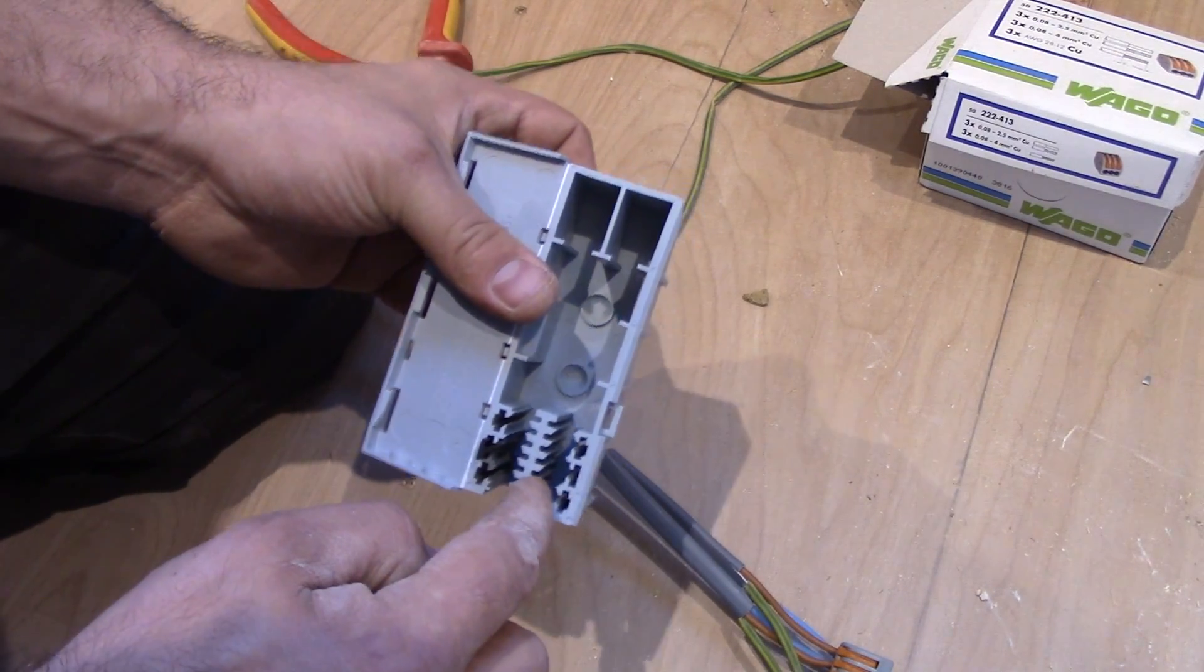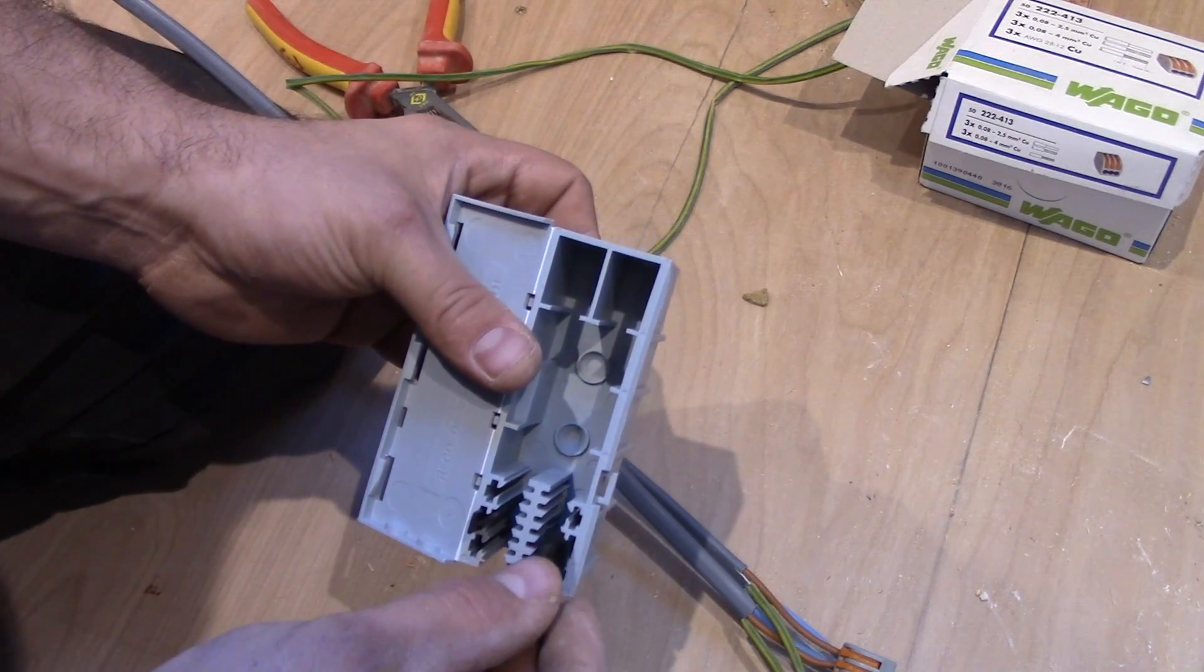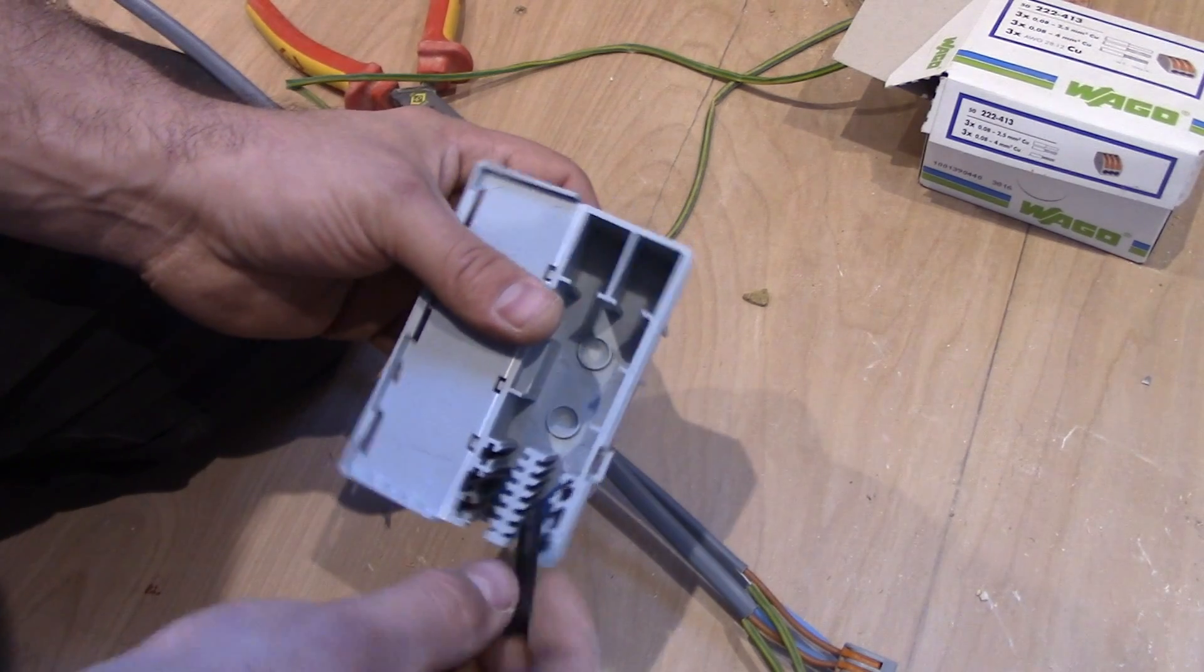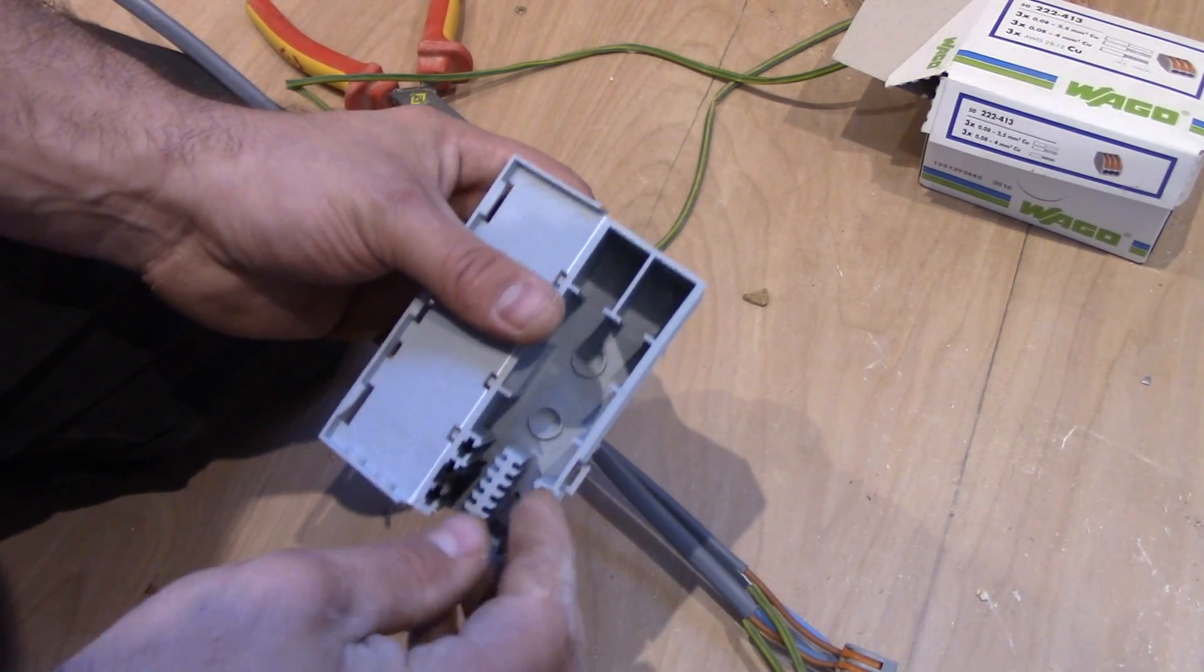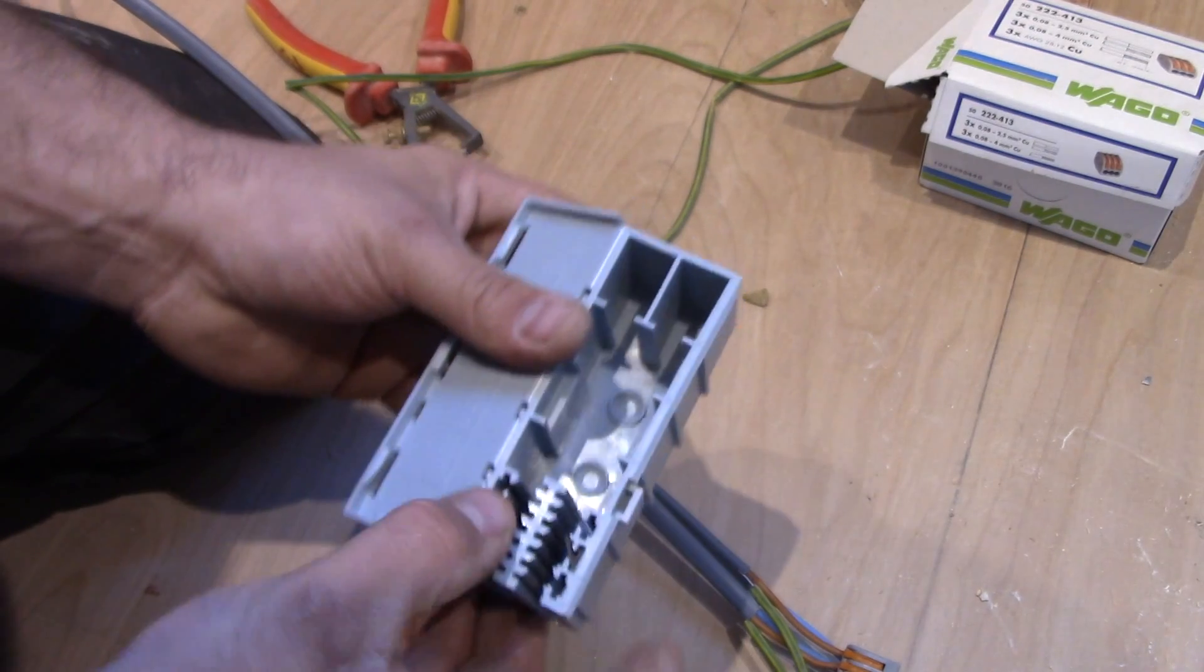So this is for the small cables, like for lighting cables. This is for the socket outlet cables or even bigger. And you don't use it at all if you want to fit really thick cable here. So we put it in this position.